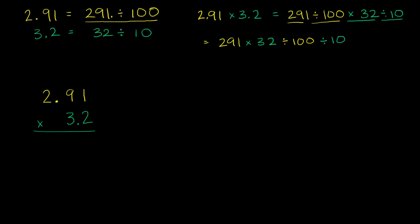Or, I could rewrite this as 291 times 32. If I divide by 100 and then I divide by 10 again, I'm essentially dividing by 1,000. So this part right over here, I could rewrite as dividing by 1,000.